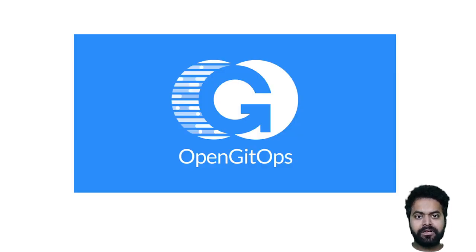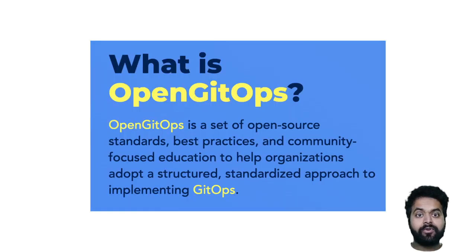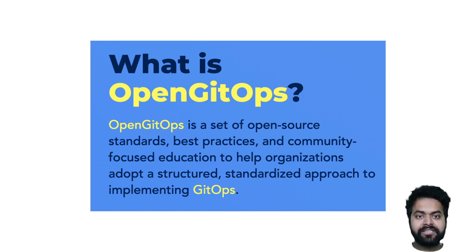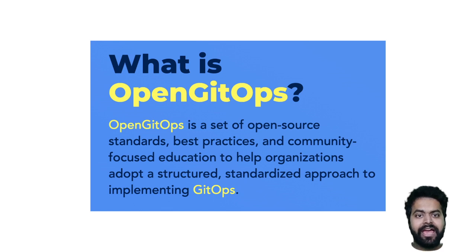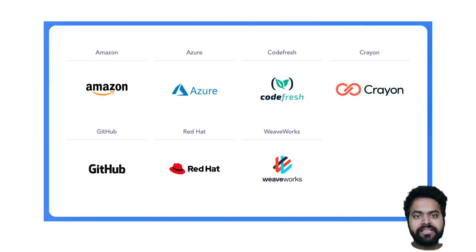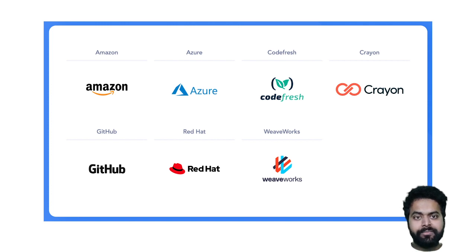A set of companies came together and formed a community called OpenGitOps, which defines a set of open source standards to help communities and organizations have a standardized approach to GitOps. This is very similar to how OCI — the Open Container Initiative — helps with standardizing the container runtime as well as how we build container images. As of now, seven companies are part of the OpenGitOps community: Amazon, Azure, Codefresh, Crayon, GitHub, Red Hat, and VMware Weaveworks. You may have seen many articles around GitOps from Codefresh and Weaveworks specifically.